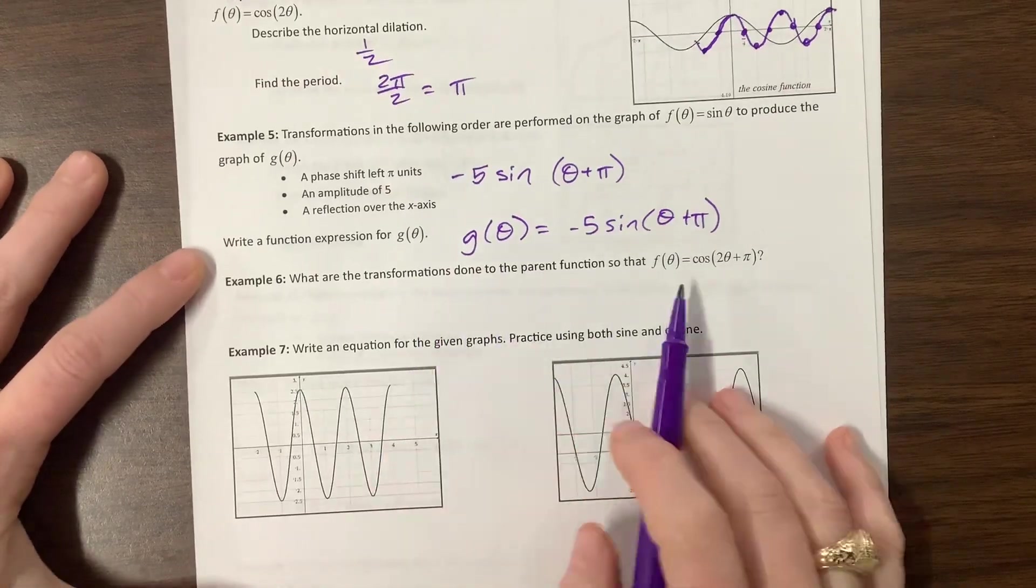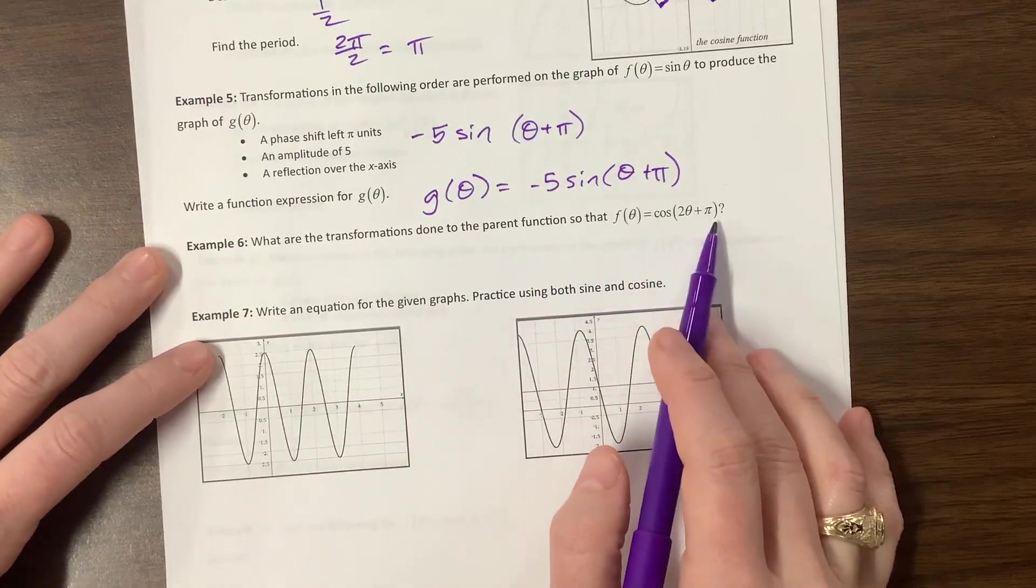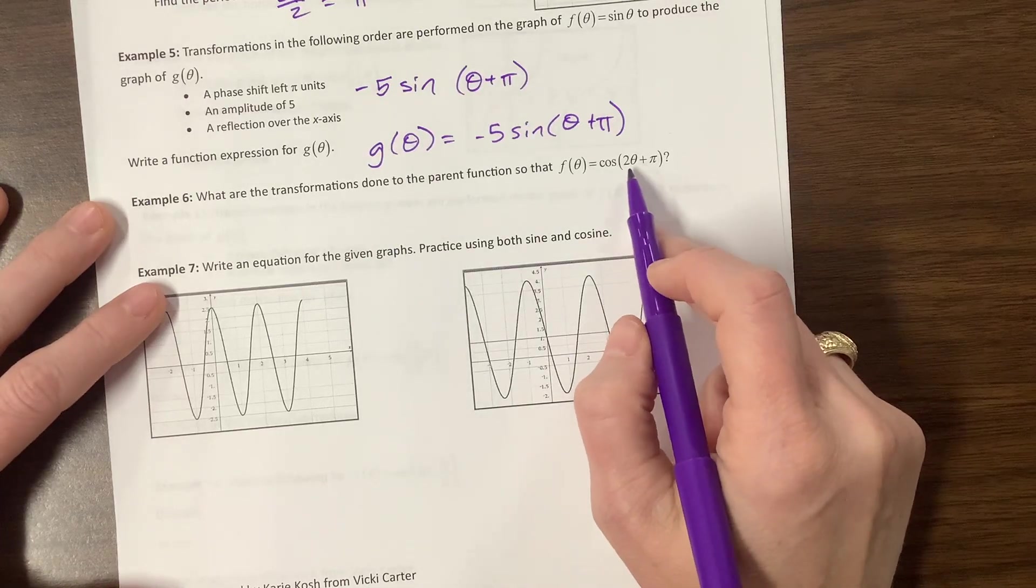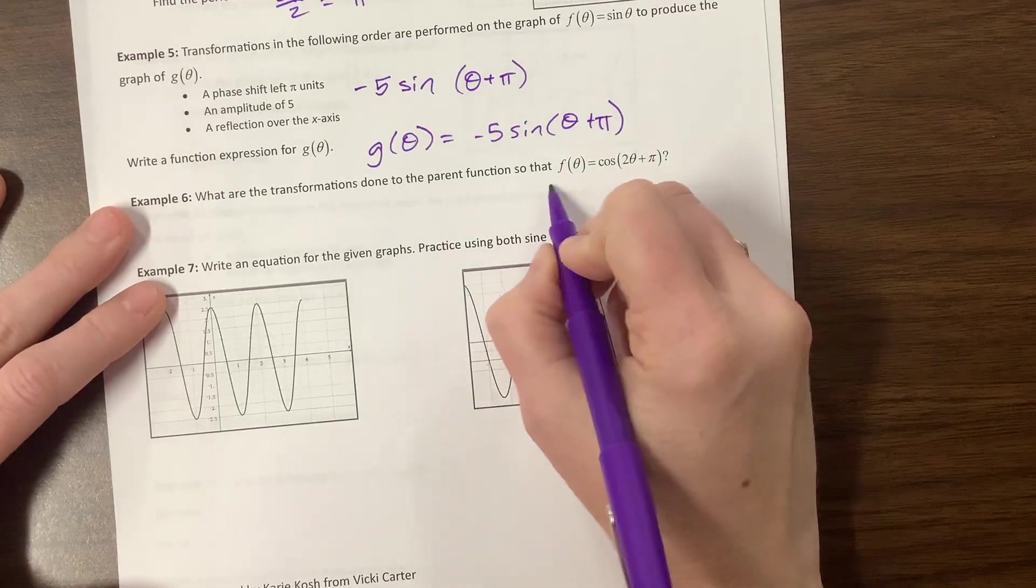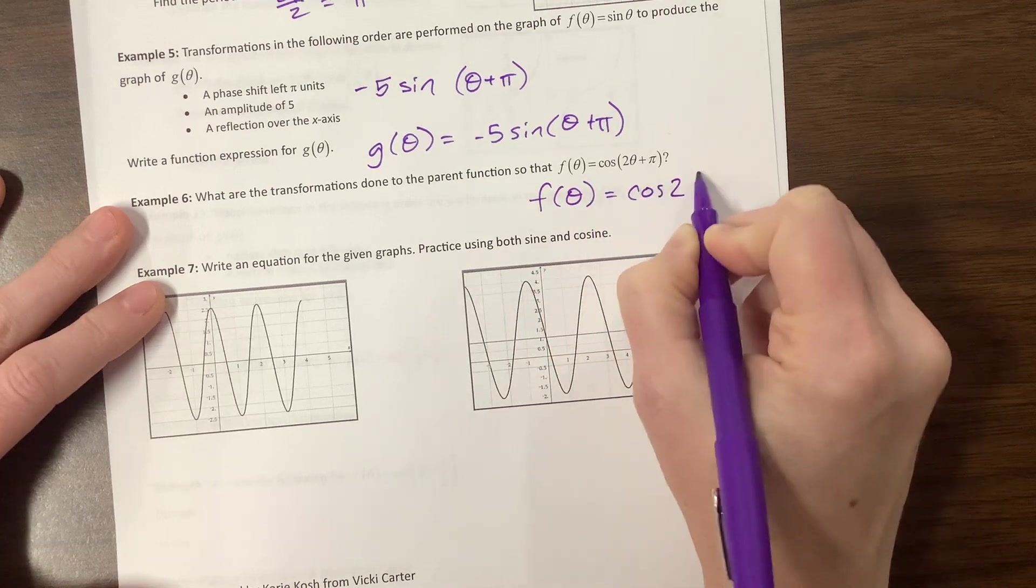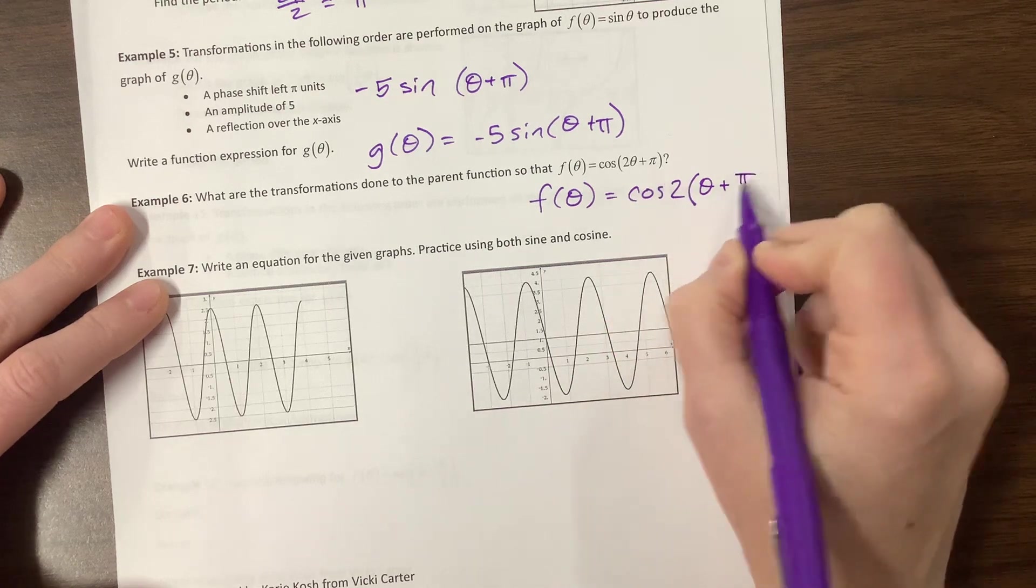Okay, what are the transformations done to the parent functions so that f of x equals cosine of 2 theta plus pi? Well, the very first thing we need to always remember to do is factor out the b value. So this can be written as f of theta is equal to cosine of 2 times theta plus pi over 2.